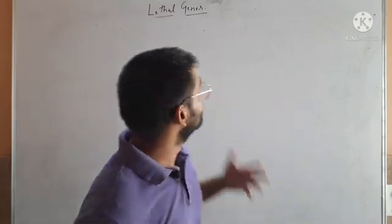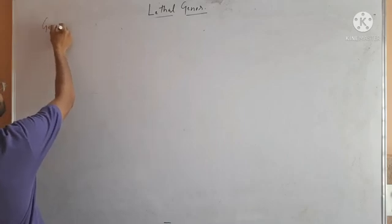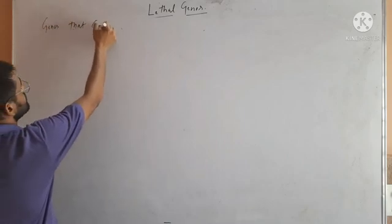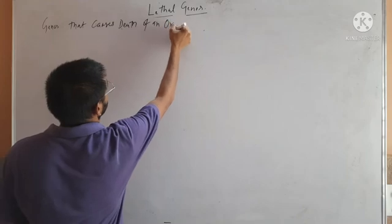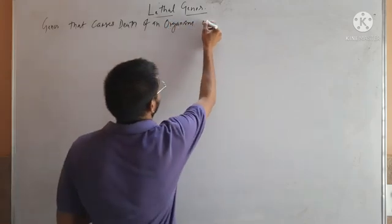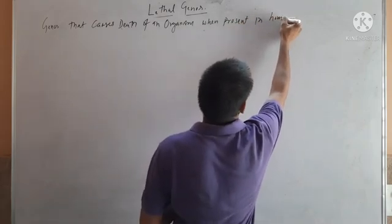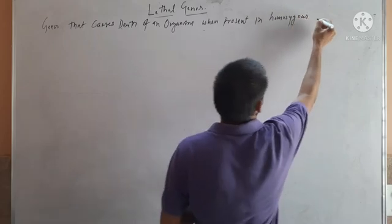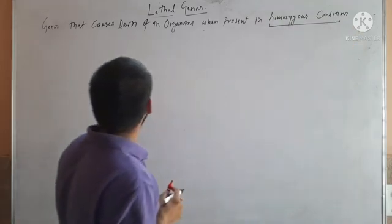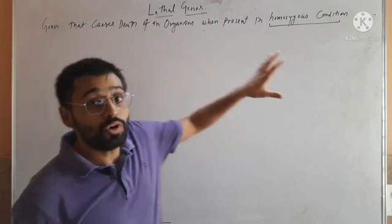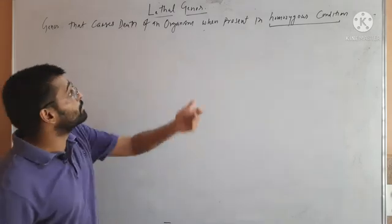Hello friends. In this video we will discuss about lethal genes. Lethal genes are the genes that cause death of an organism when present in homozygous condition. When the genes are present in homozygous condition and these genes cause death of the organism, then these genes will be called lethal genes.